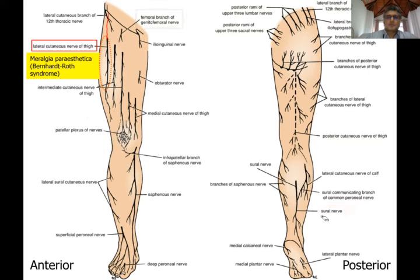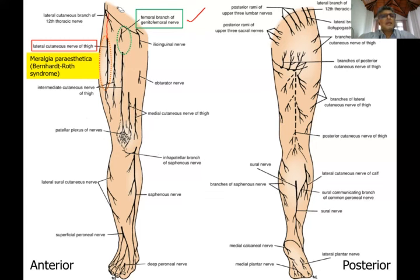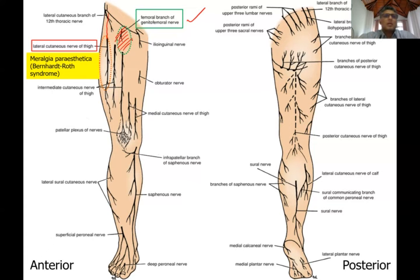The femoral branch of the genitofemoral nerve is a nerve you encounter when dissecting the inguinal canal during anterior abdominal wall study, and again at the posterior abdominal wall. The genitofemoral nerve has two components — genital and femoral. The femoral part supplies the skin over the femoral triangle area. When doing procedures on the femoral vein and giving local anesthesia, you are mainly blocking this femoral branch of the genitofemoral nerve.